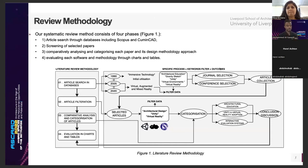As an initial step to our research, we have included the following phases: article research and filtration through databases including Scopus and HumanCAD; screening selected papers and comparatively analyzing and categorizing each paper and its design methodology approach; and evaluating each software used in these papers through charts and tables, understanding how and why these tools were used in each of the research outputs.